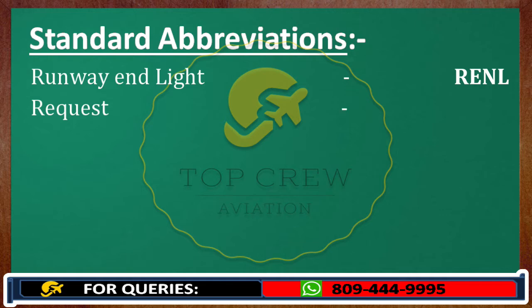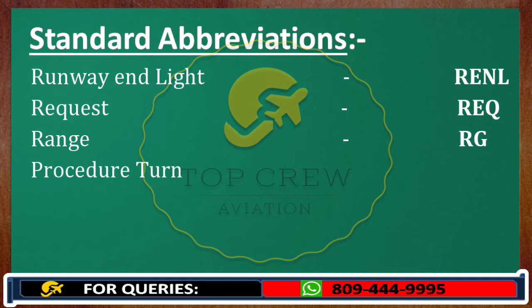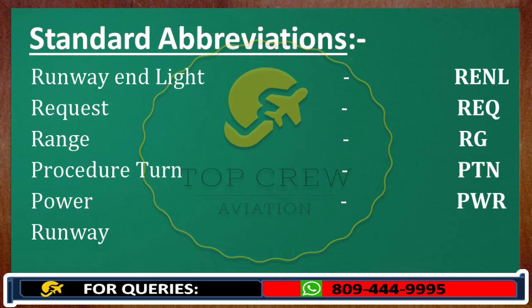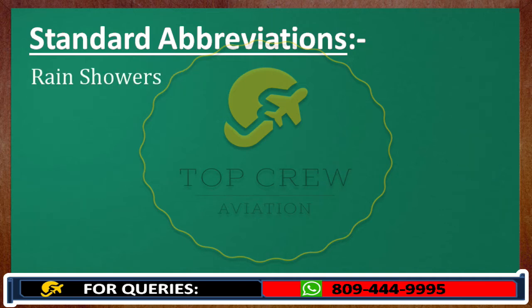Request: REQ. Range: RG. Procedure term: PTN. Power: PWR. Runway: R. Rain showers: RASH.